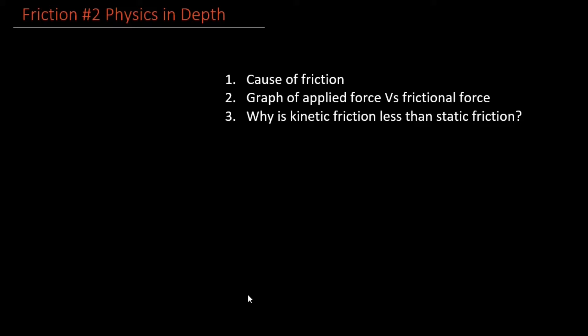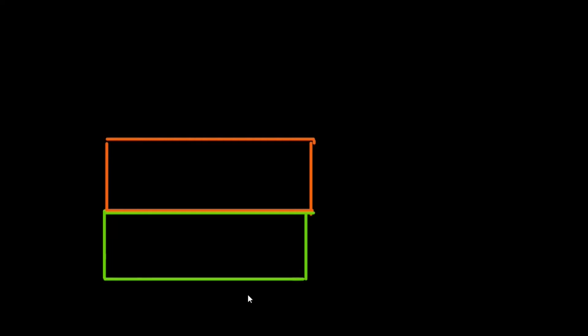So friction is caused by bodies in contact. Consider body A and body B — these two bodies are in contact. When we look at all surfaces, the bodies are in contact. The true area of contact is extremely small — a very small percentage of the apparent area of contact between A and B.